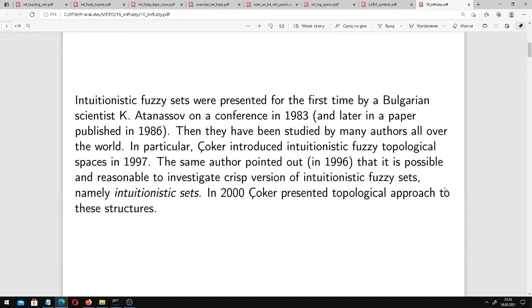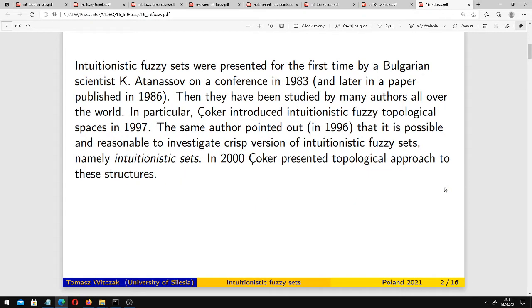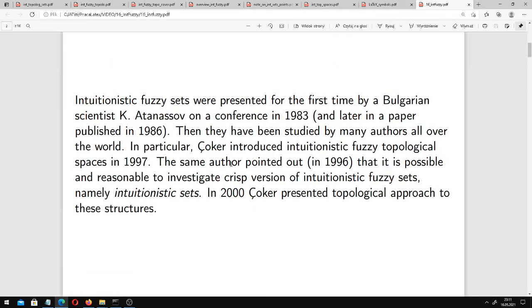In particular, Choker introduced intuitionistic fuzzy topological spaces in 1997. The same author from Turkey pointed out in 1996 that it's possible and reasonable to investigate the crisp version of intuitionistic fuzzy sets, namely intuitionistic sets and points. In 2000, Choker presented a topological approach to these structures.